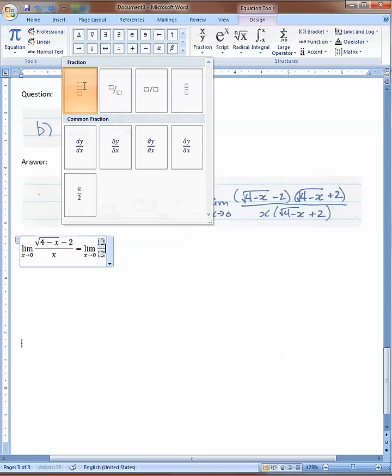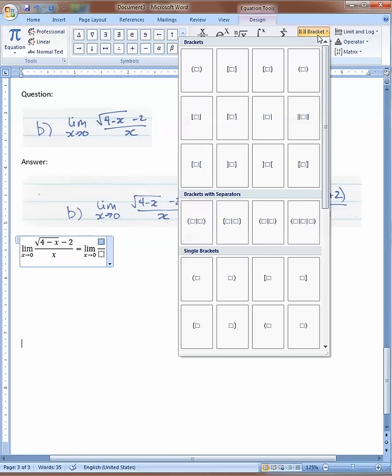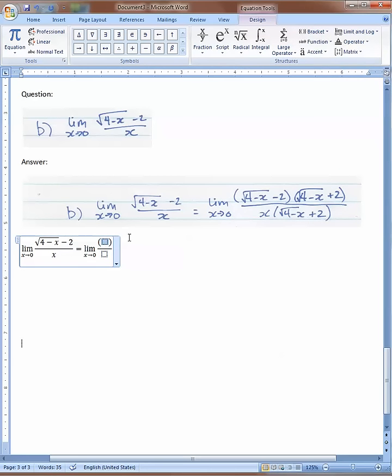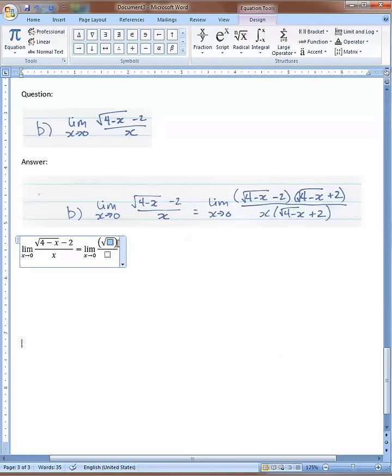Now first we need a fraction - that's our biggest form. Then in the fraction we need a pair of brackets, and in that we need a radical. There: √(4-x), right arrow, minus 2.